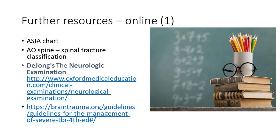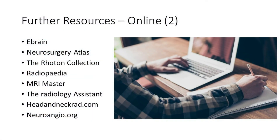Useful online resources include the ASIA chart, which is easy to get hold of, and the AO Spine classification of spinal fractures — typically divided into subaxial, atlantoaxial, and thoracolumbar. For neurological examination and advancing that knowledge, de Jong's is highly recommended. Brain trauma guidelines are entirely open access and produce updated versions every couple of years. Other useful platforms include eBrain, Neurosurgery Atlas, and Radiopaedia.